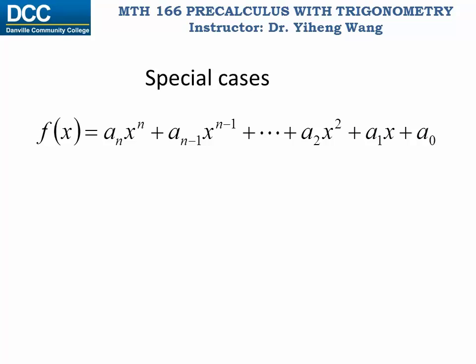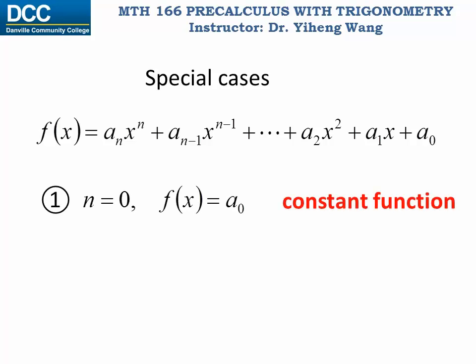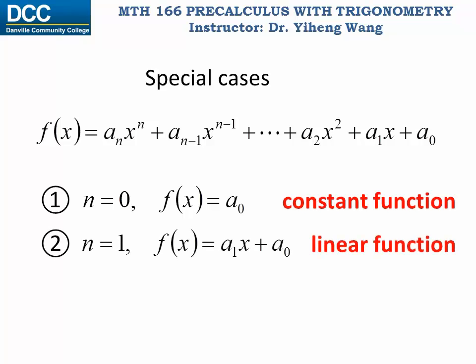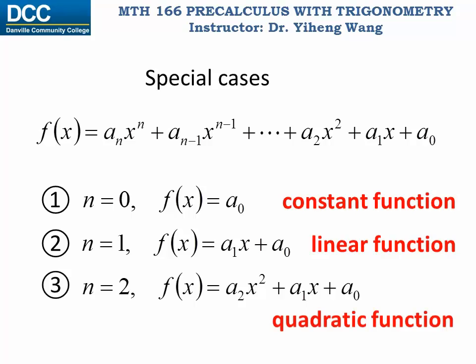Let's look at several special cases. If n equals zero, the polynomial function of degree zero simply reduces to a constant function. Note that the leading coefficient a_0 cannot equal zero. If n equals one, a polynomial of first degree is the linear function we already learned about. If n equals two, this is the quadratic function we will discuss in this video. If n is greater than or equal to three, we call it a polynomial function of higher degree, which we will discuss in a later video.